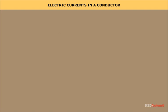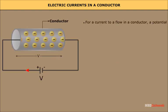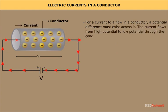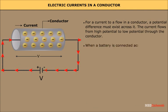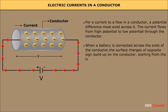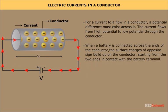Electric Currents in a Conductor. For a current to flow in a conductor, a potential difference must exist across it. The current flows from high potential to low potential through the conductor. When a battery is connected across the ends of the conductor, surface charges of opposite sign build up on the conductor, starting from the two ends in contact with the battery terminal.